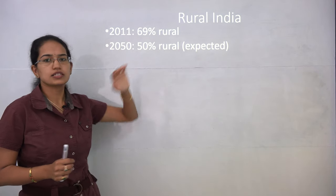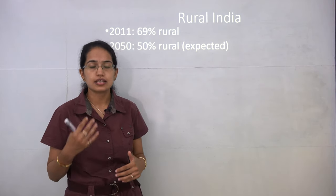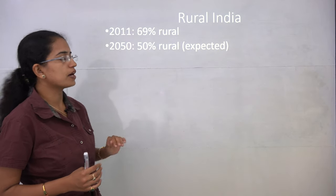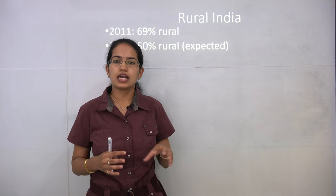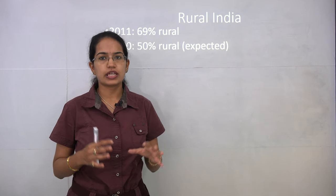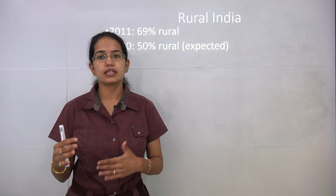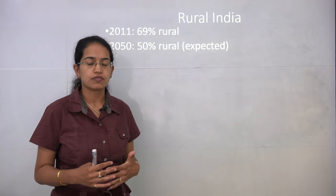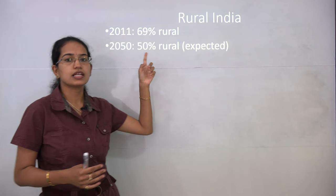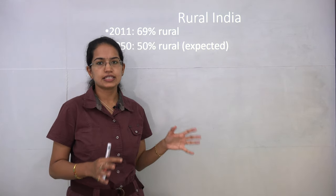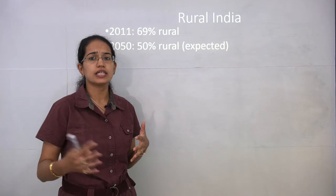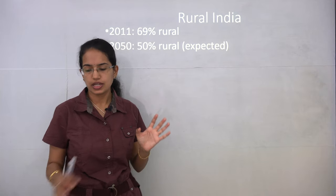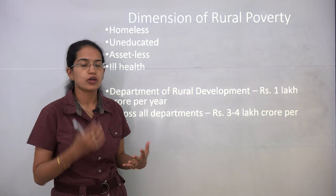Why is it important to study rural India? As of 2011, 69 percent of the population is rural, but by 2050 this is expected to drop to only 50 percent. However, rural areas account for agriculture, which is the predominant and major sustaining economic activity of India. If this ratio decreases tremendously, it would affect agriculture as well.